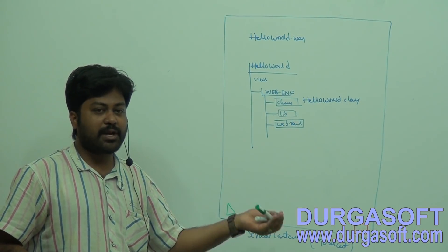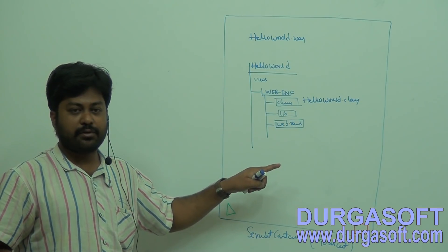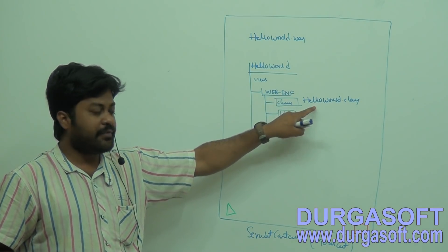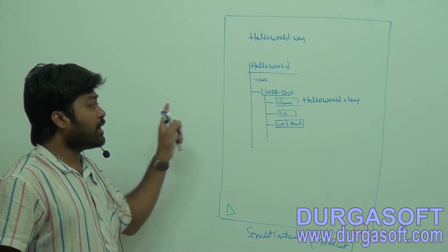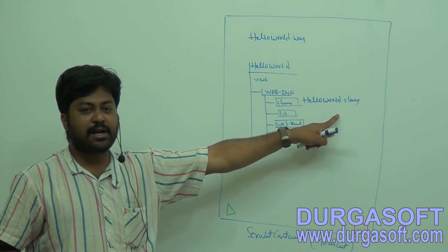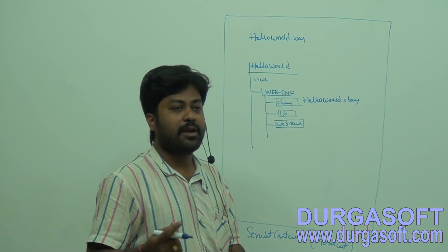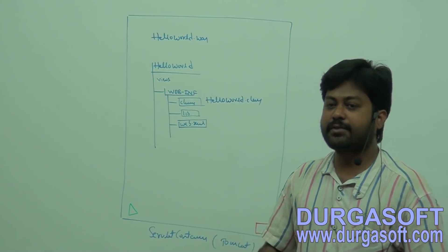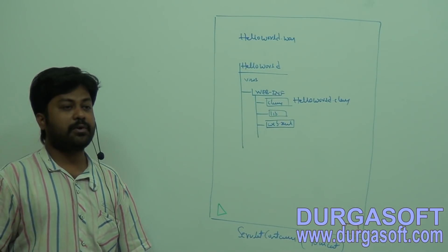Either at deployment time or at the first user request — we know this, right? If you put load-on-startup for your HelloWorld class, then at the time of starting, this class object will be created. Otherwise, at the first user request — whenever the first user requests this class — it will create your object. So your object can be created in two ways: either at first user request or at loading time. Before creating your servlet object, what will it do?